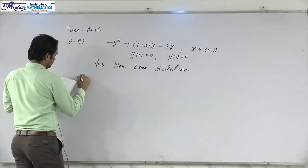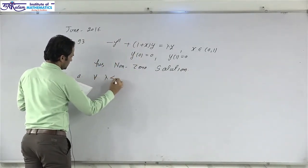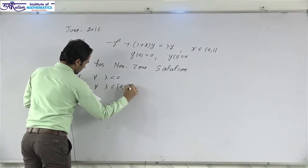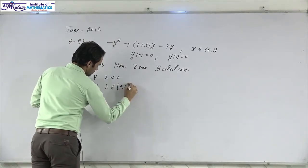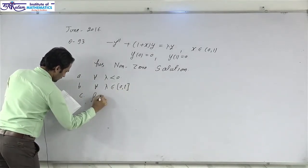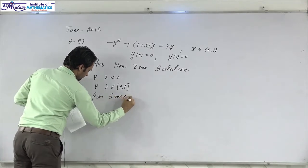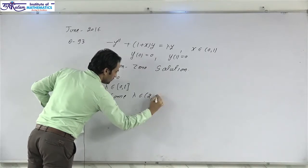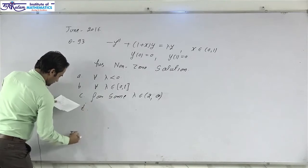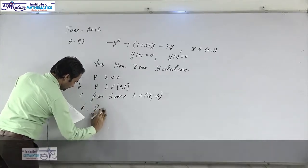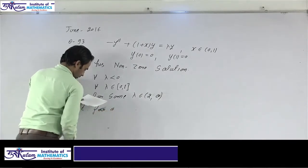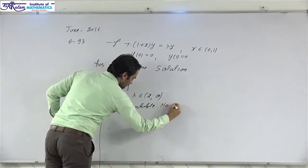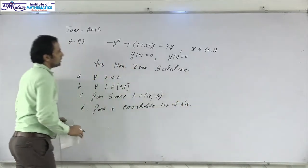The options are: (A) for all lambda less than 0; (B) for all lambda belonging to the closed interval [0, 1]; (C) for some lambda belonging to the open interval (2, infinity); and (D) for a countable number of lambdas.